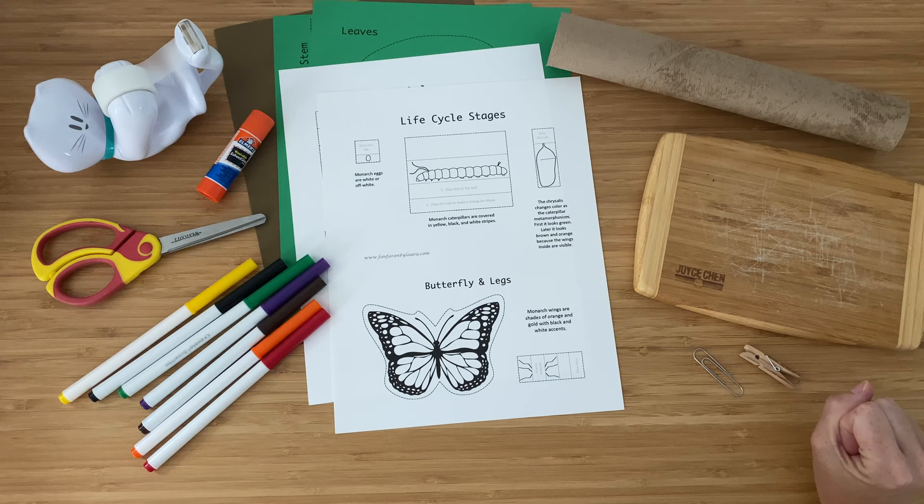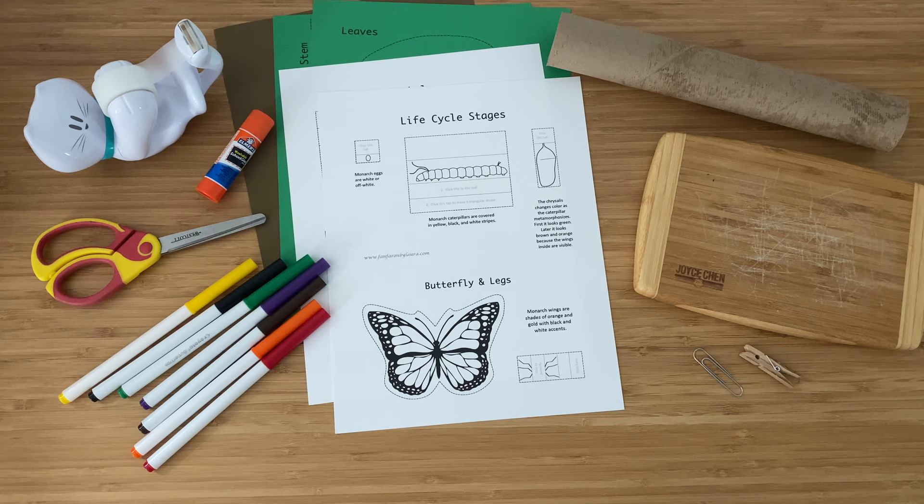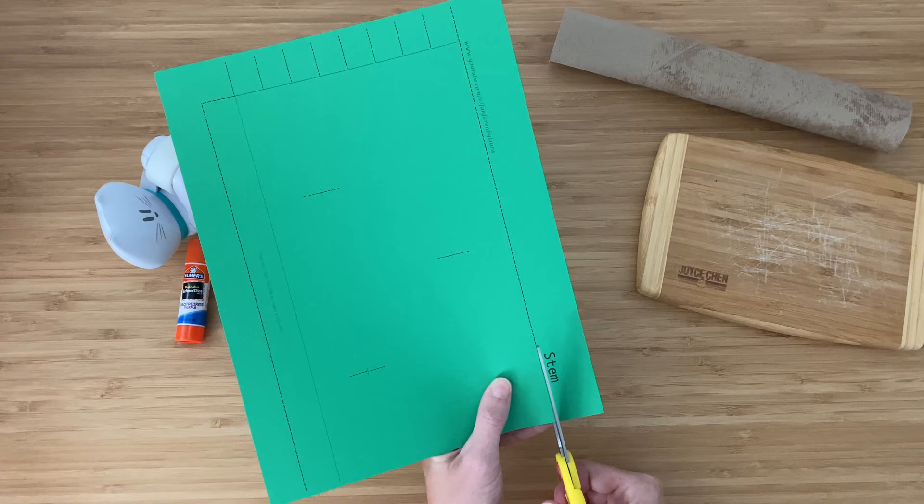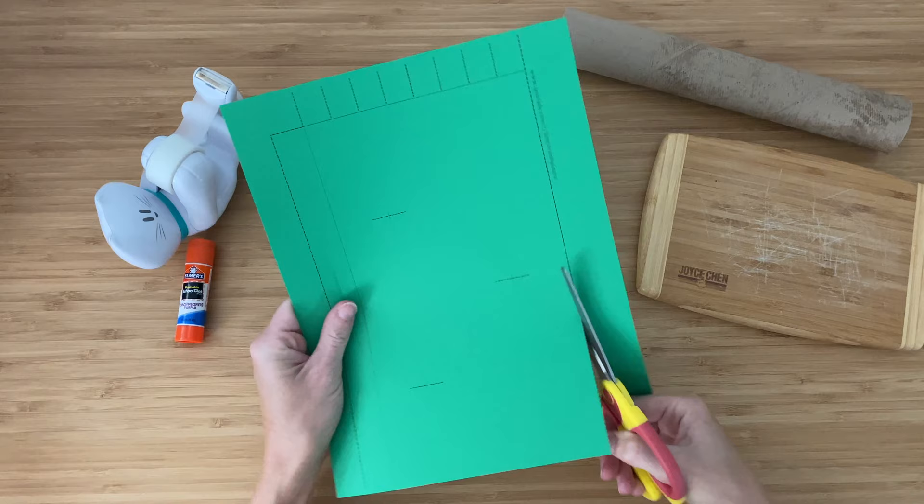Adults, you may want a craft knife as well. Mine is missing because I hid it all too well from my four-year-old and I can't find it myself. Kids, you can do everything with the scissors. Let's start by cutting around the outside of the stem. You're going to be cutting on the black dashed line.